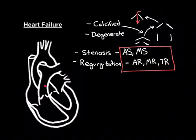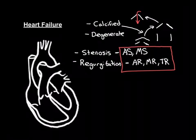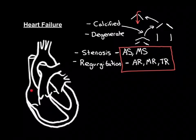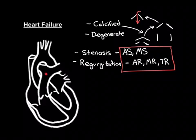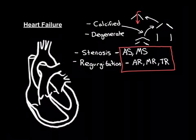Tricuspid regurgitation: when the right ventricle contracts, blood is pushed back into the right atrium rather than forward. That means less blood is going up the pulmonary trunk, so cardiac output is reduced. That is an example of right heart failure, and it would not typically lead to pulmonary oedema.